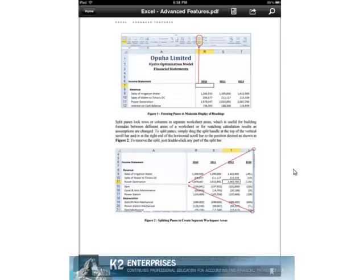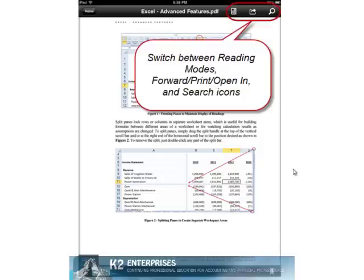As currently shown on the screen, in the upper right-hand corner, three icons exist. The icon on the left allows a user to switch between reading modes. The icon in the middle provides forward, print, and open in another app options. And the icon on the right allows a user to search the PDF document for specific words or phrases.